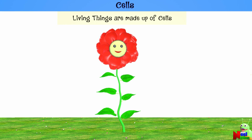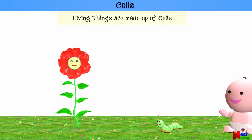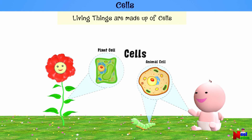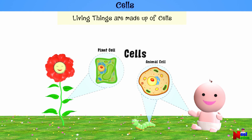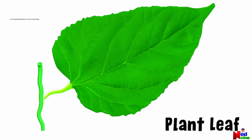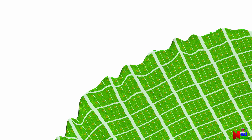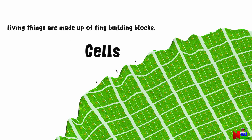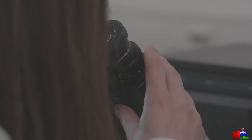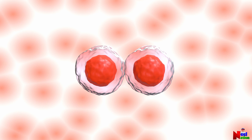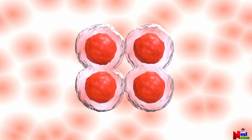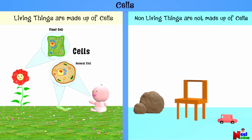Cells! Another fascinating difference that sets living things apart from non-living things is that all living things are made up of cells. All living things — like plants, animals, and even you — are made up of tiny building blocks called cells. The cell is the basic unit of life. Cells are so tiny that they can only be seen with a microscope. These cells work together to do all the amazing things that living things can do, like growing, moving, and even breathing. On the other hand, non-living things such as toys, rocks, and chairs don't have these tiny cells.